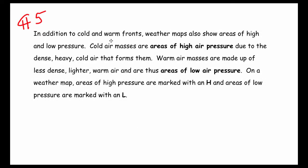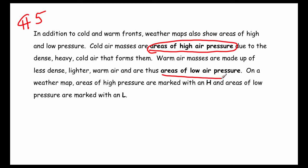Let's look at paragraph five. We have considered cold air masses and warm air masses. In addition to cold and warm fronts, weather maps also show areas of high and low pressure. Cold air masses are areas of high pressure due to the dense, heavy cold air that forms them, and warm air masses are made up of less dense, lighter warm air and are thus areas of low pressure.